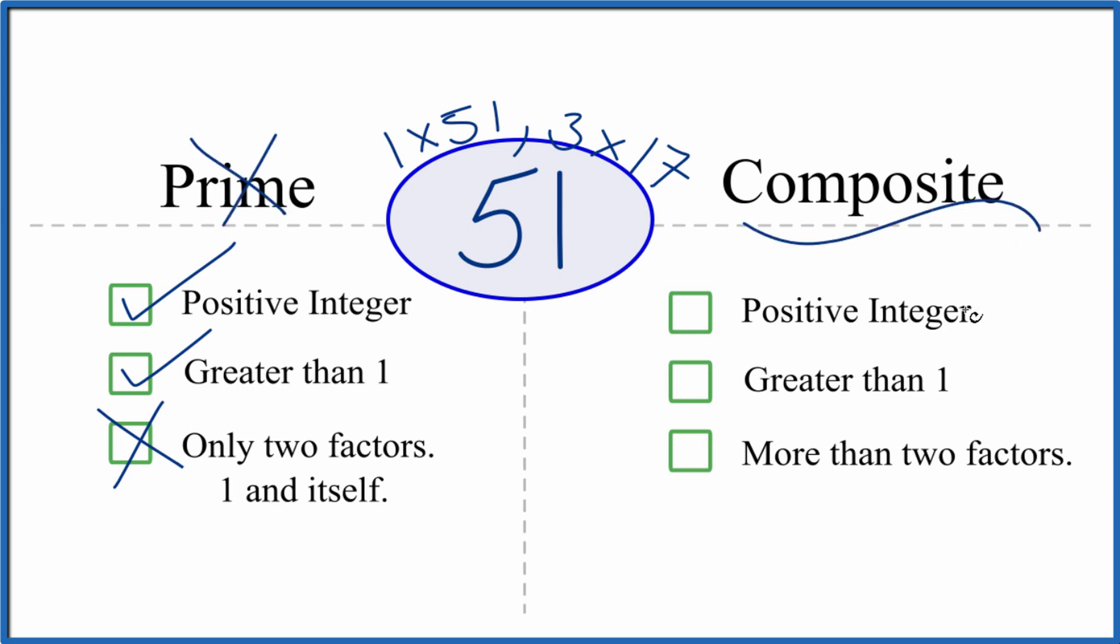But is it a composite number? It's a positive integer, it's greater than 1, and there are more than two factors. 1, 2, 3, 4. That means 51 is a composite number.